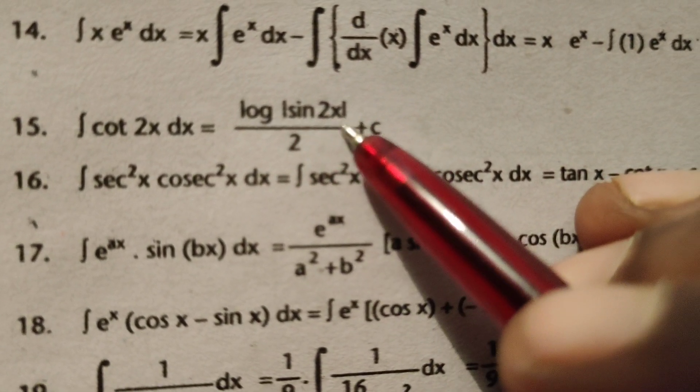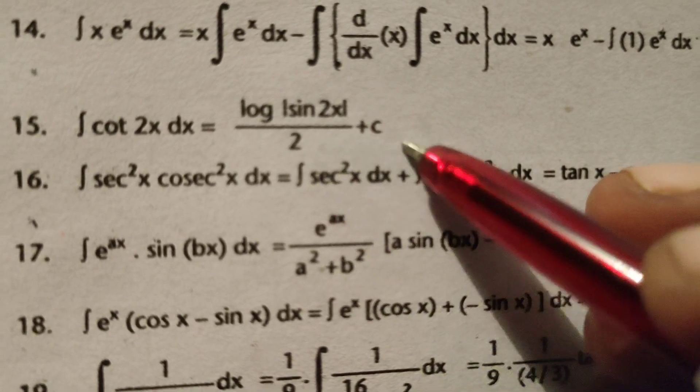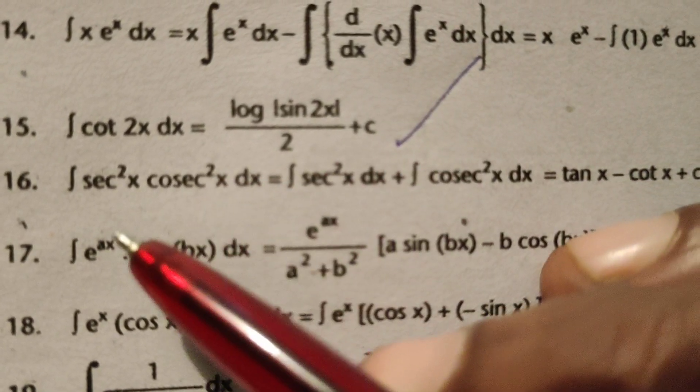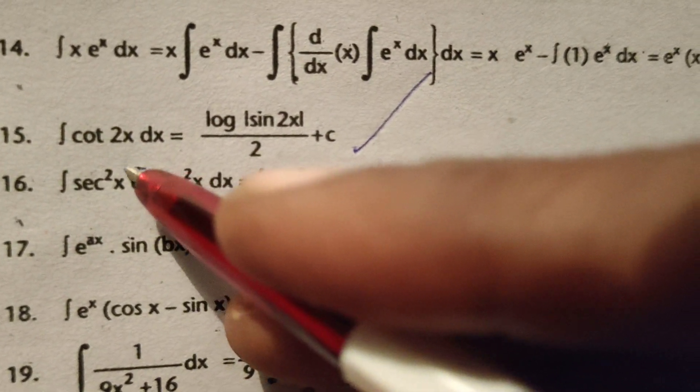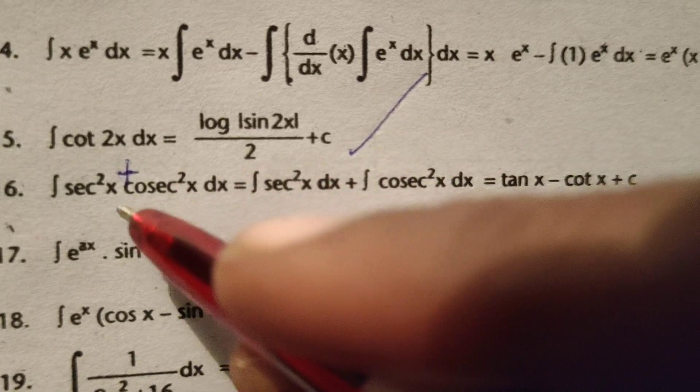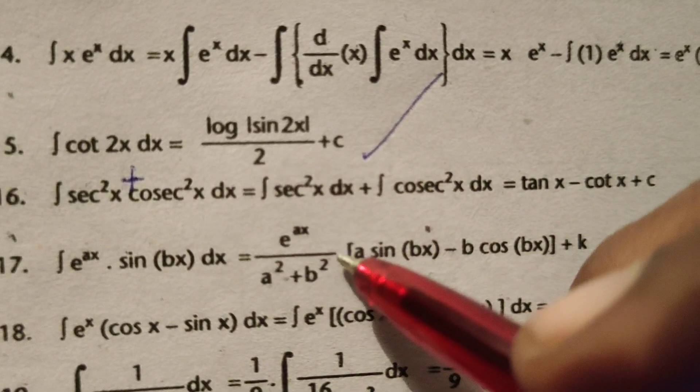Integral of secant square x plus cosecant square x dx, that is integral of secant square x dx plus integral of cosecant square x dx.